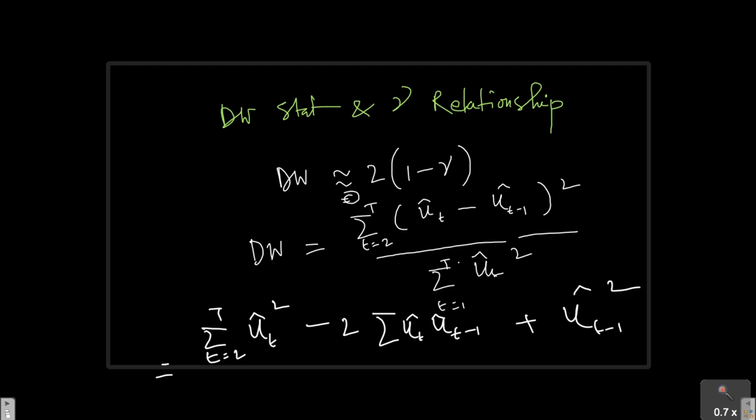And in the denominator, since I have ut hat for all of this, ut hat square for all of these terms, I can actually write down t is equal to 1 to t ut hat square. Here also, I can write t is equal to 1 to t ut hat square and oh, sorry, I forgot to give this summation sign here.